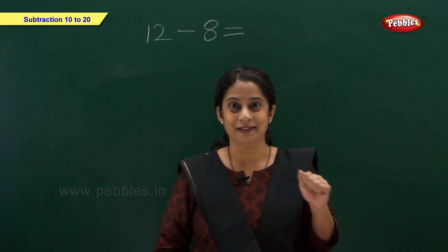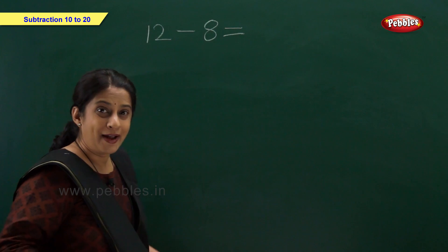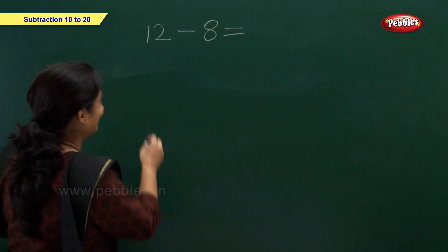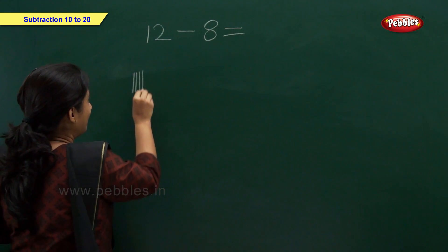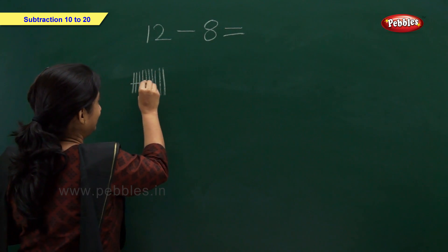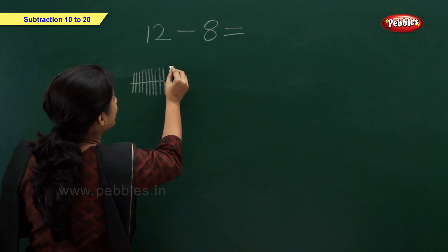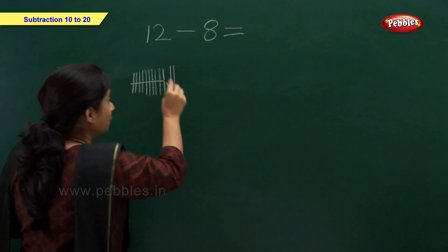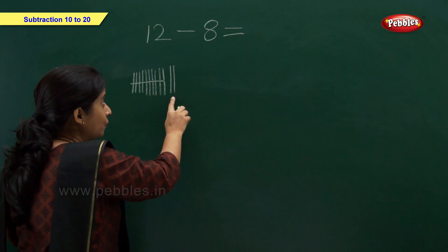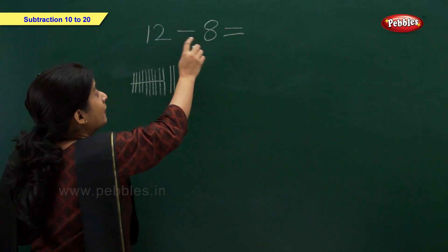Let us solve this example. Now we have 12 minus 8. 12 means 1 ten and 2 ones. Let's draw: 1, 2, 3, 4, 5, 6, 7, 8, 9, 10 — this is our bundle of 10. Then 1, 2 — that's 2 ones. Now we have 1 ten and 2 ones. Now let's minus 8 from 12.